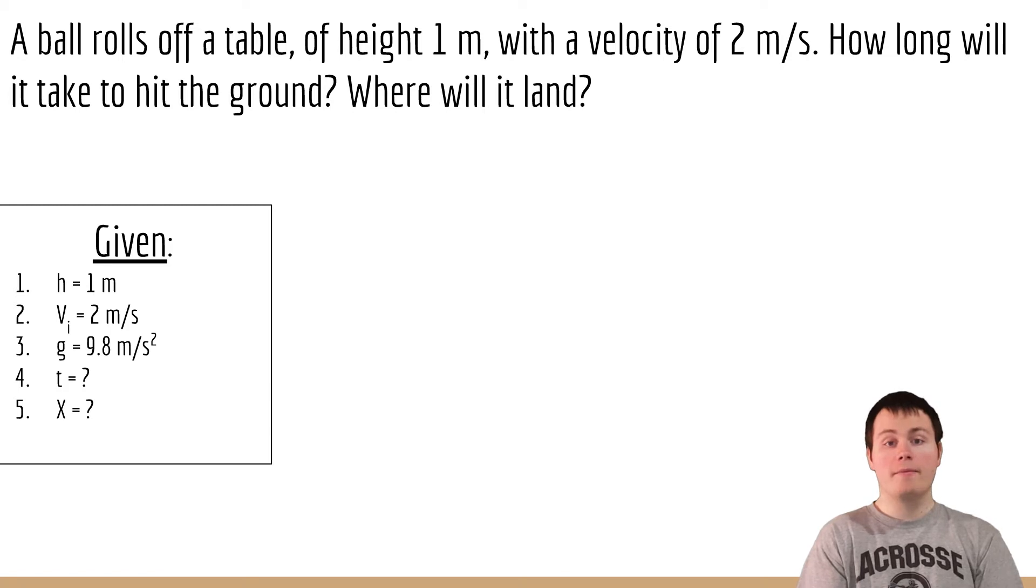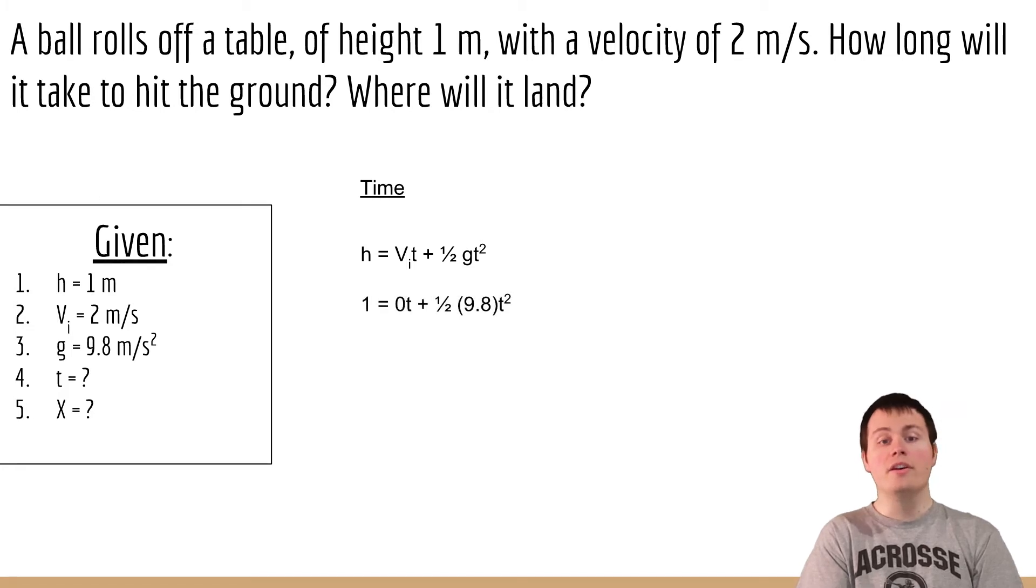So let's work on time first. To do this all we're going to have to do is just use the simple equation which we've used many times. Height is equal to initial velocity times time plus one half a t squared. In this case a is gravity.